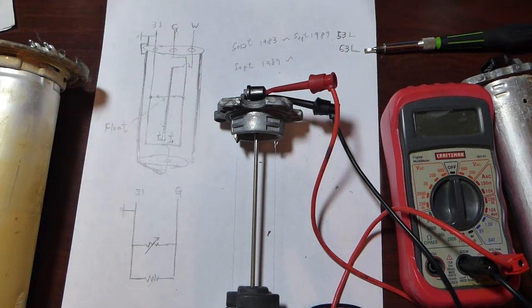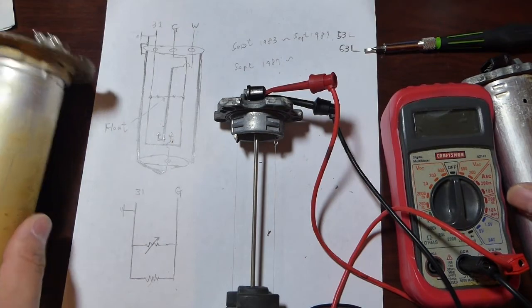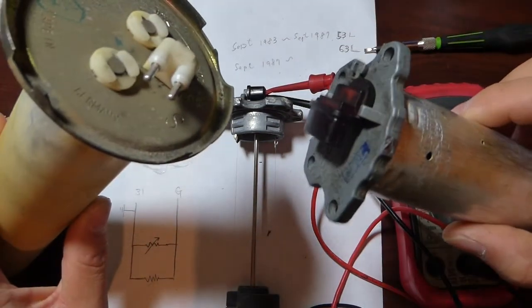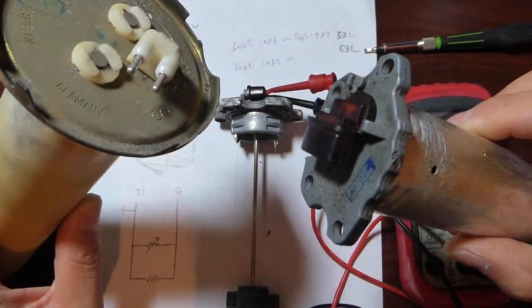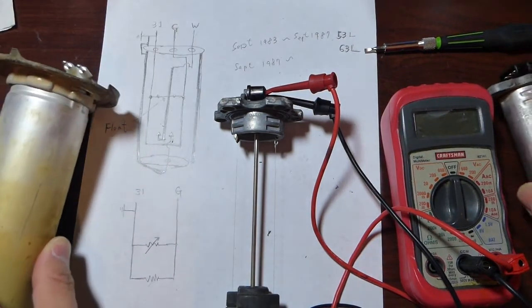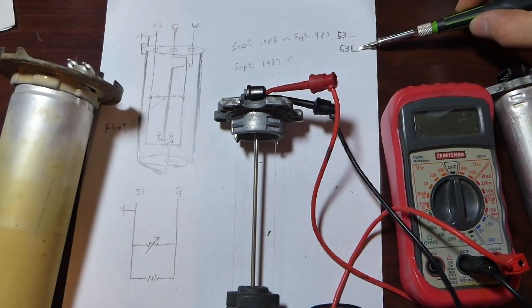If you remove both fuel level sending units, one on each side, then you know you have a 63 liter tank.